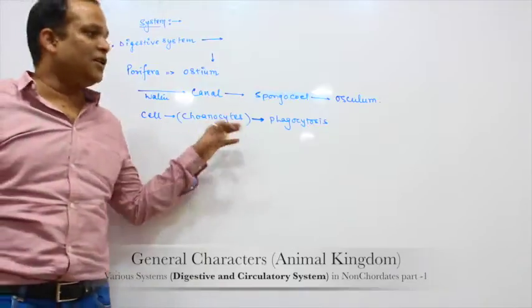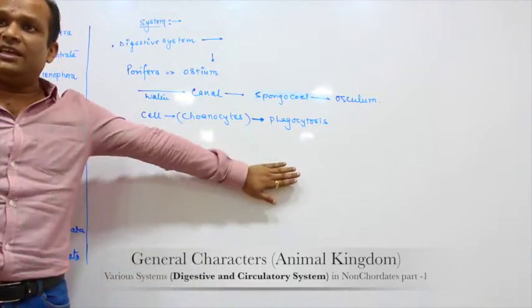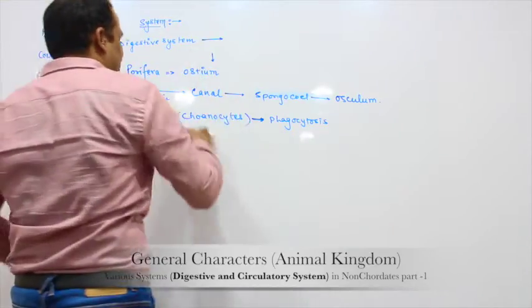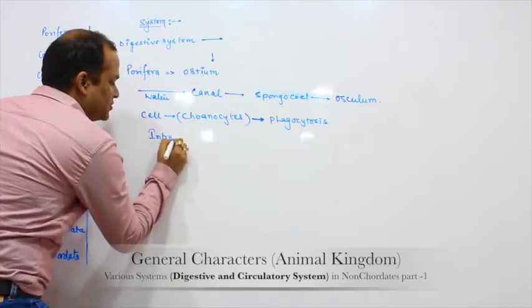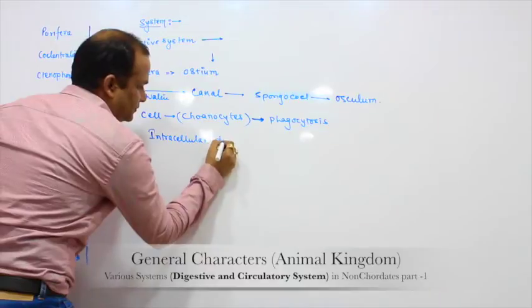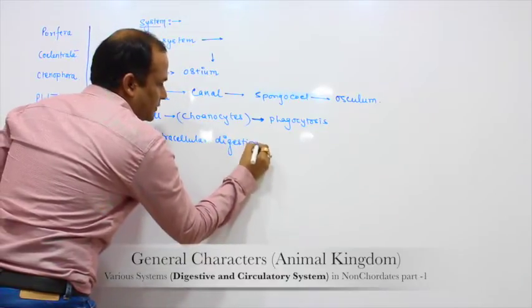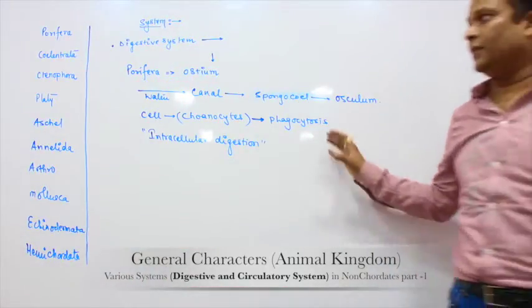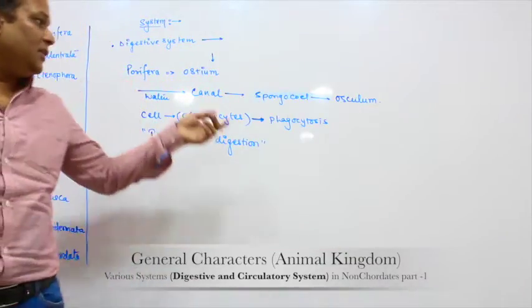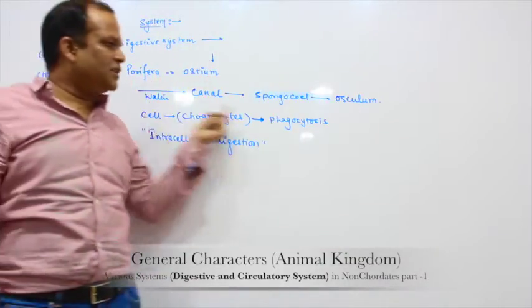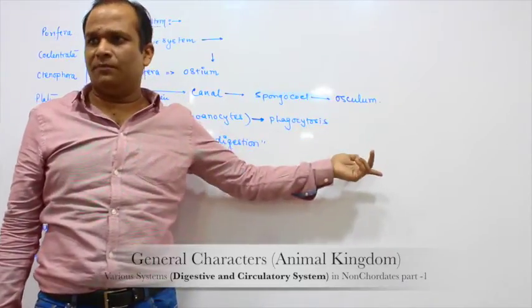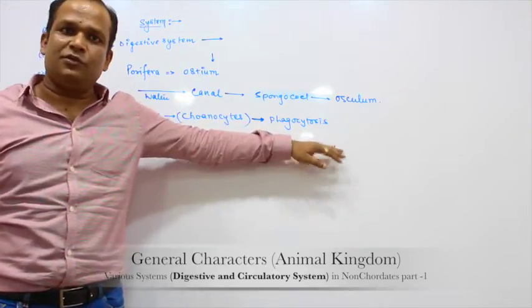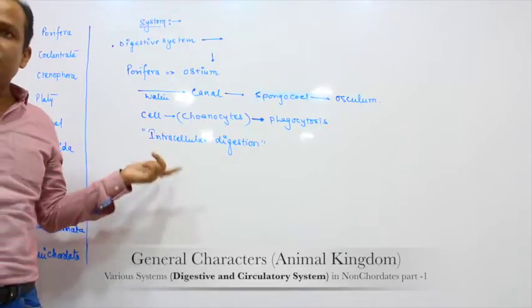After phagocytosis, directly the food goes inside the cell — as you have studied in cytology — and digestion happens inside the cell. So digestion in this case is intracellular digestion. In case of Porifera, food comes through ostium, choanocytes do phagocytosis, and the digestion is intracellular digestion.